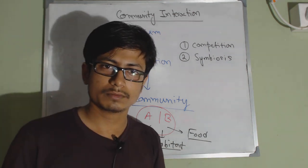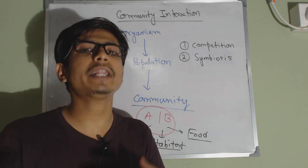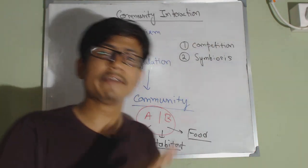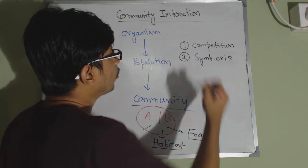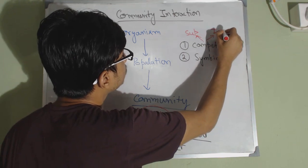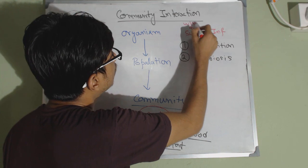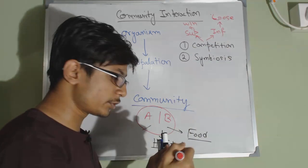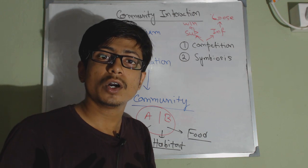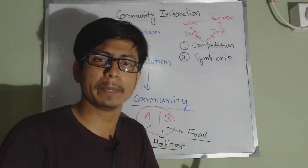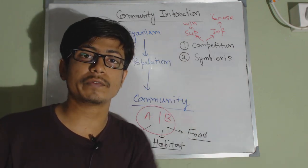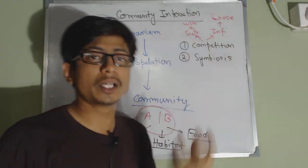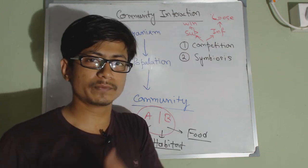If two communities have the same food source, both of them try to gather that food, so they end up in competition. Every time there is a competition, there will be one winner and one loser — one will be superior and another will be inferior. The superior will win and the inferior will lose. Winning means the organism can continue to live in that environment through evolution, while losing means extinction of that organism from the ecosystem.